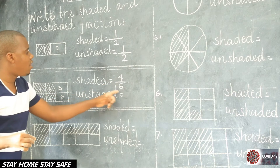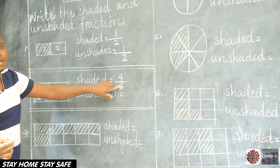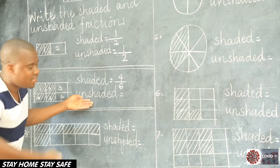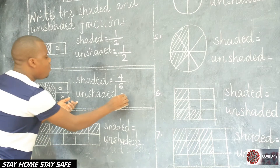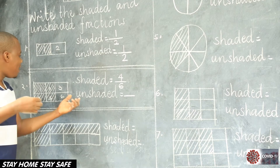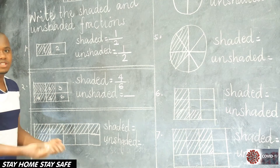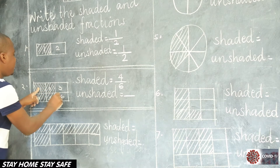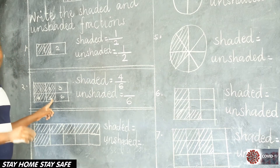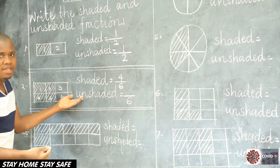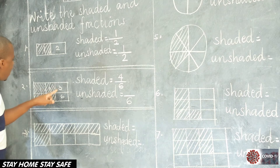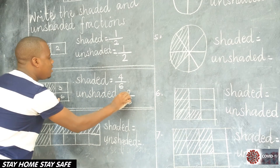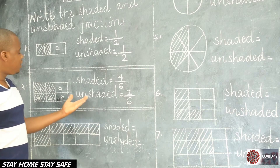What about the unshaded? We are moving with both things together, because in each illustration there is the shaded and unshaded. The word unshaded means not shaded — we also look for the parts that are not shaded. So you come here and still do the same. The denominator will be equal to the number of parts that make up the whole illustration. This one has one, two, meaning our denominator is two. Parts that are not shaded are also one. So the unshaded is also a half for that illustration.